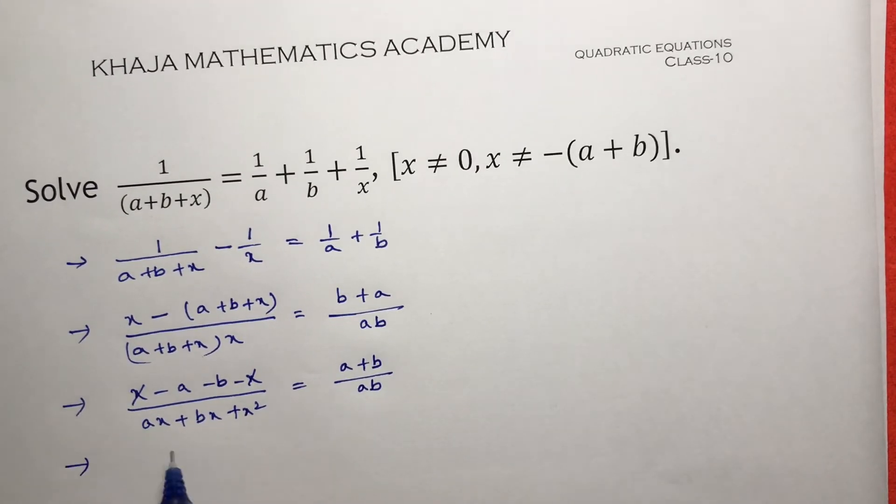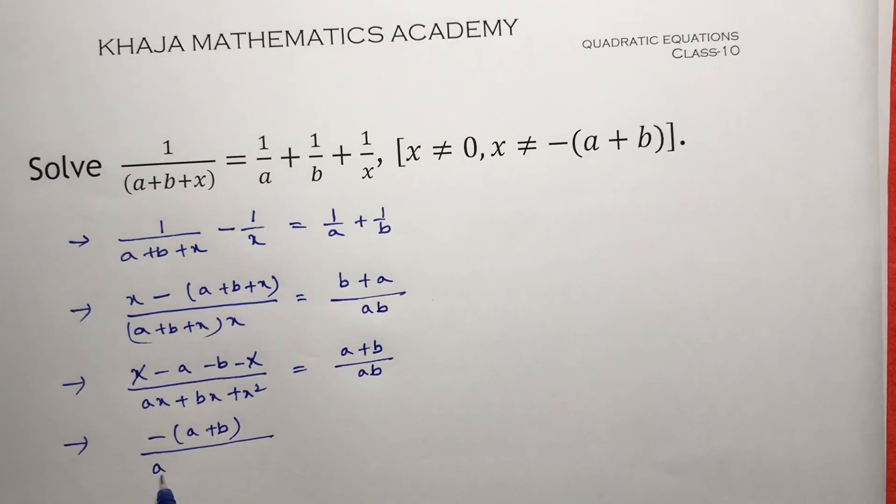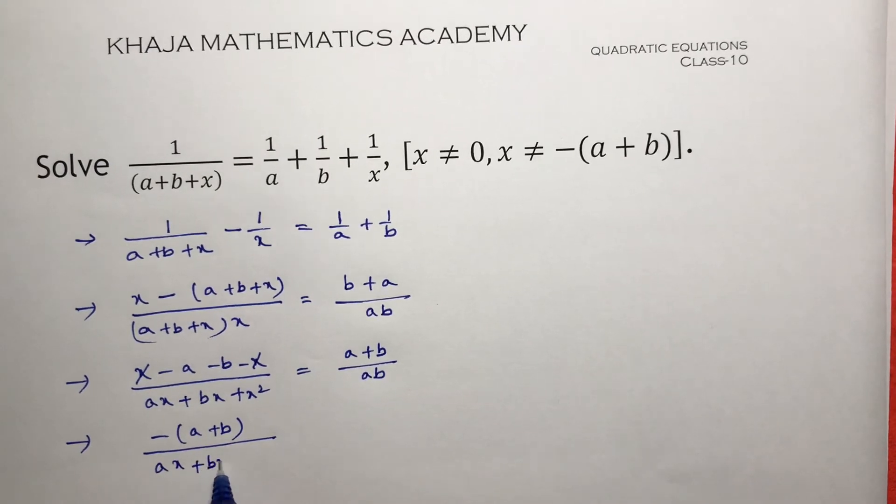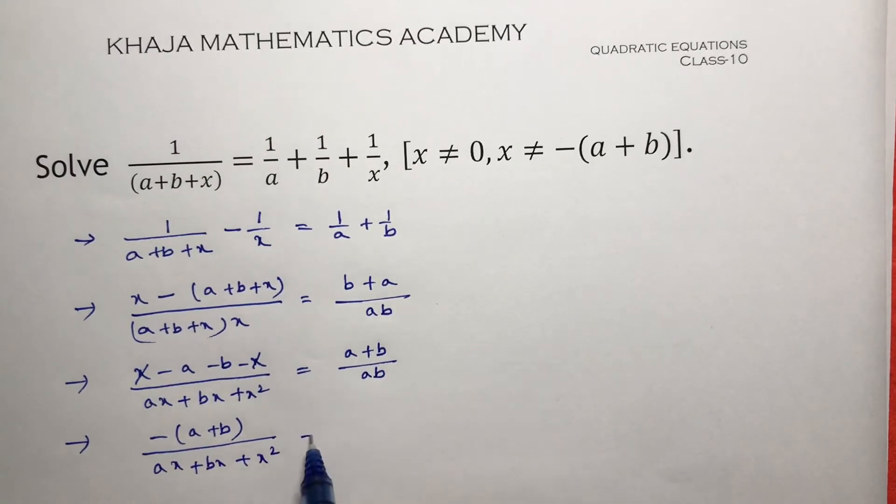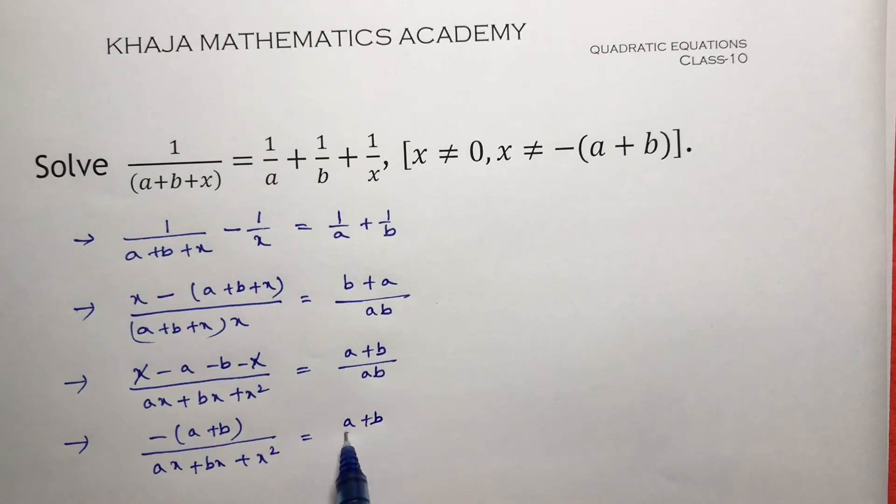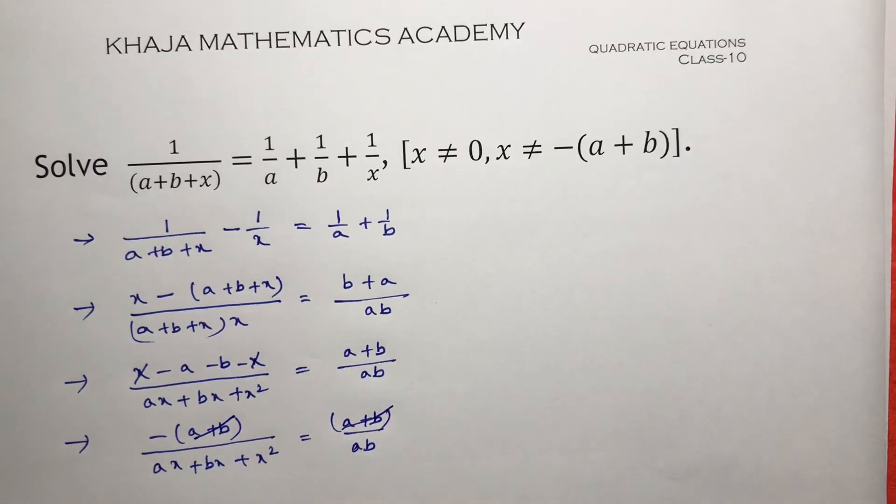If I take minus common, minus of a plus b by ax plus bx plus x squared equals a plus b by ab. So here a plus b and a plus b will cancel.